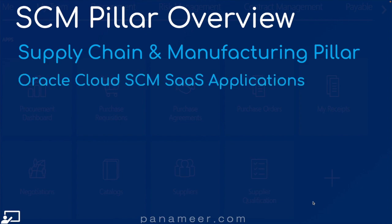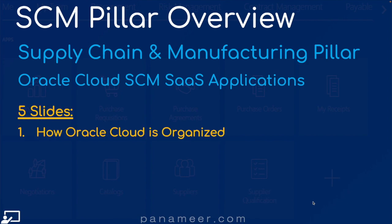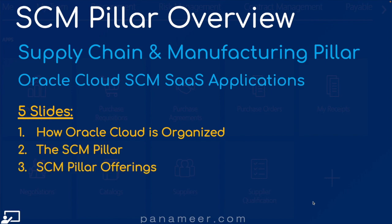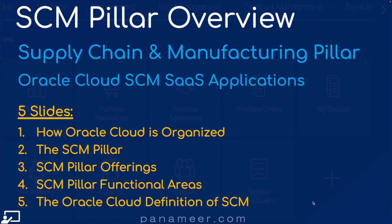This pillar is part of the Oracle ERP Cloud Software as a Service service line. Click the link above to watch a quick video explaining Oracle Cloud and its service lines. I'm going to use the following five slides to explain this topic: how Oracle Cloud is organized, the supply chain and manufacturing pillar, SCM pillar offerings, SCM pillar functional areas, and finally, the Oracle Cloud definition of SCM — and I'm going to do this in less than five minutes. So let's get started.